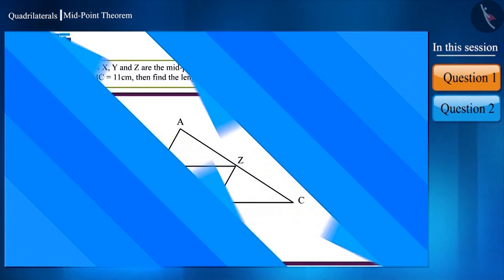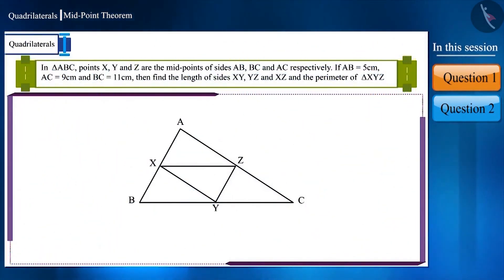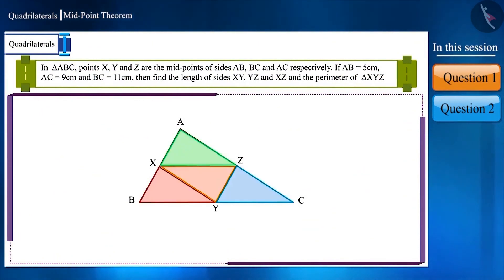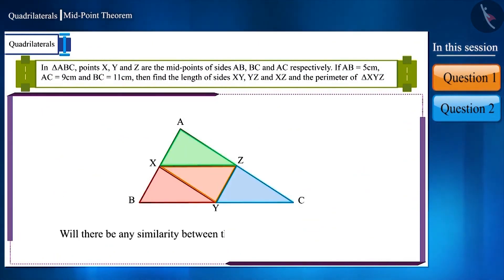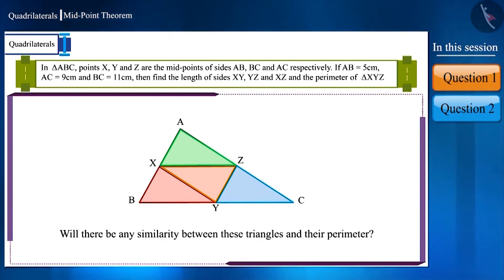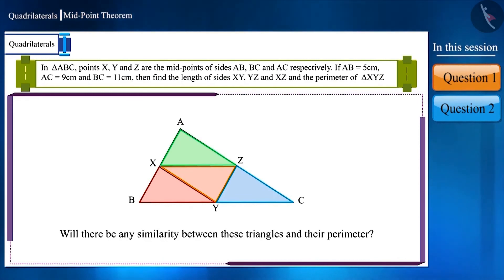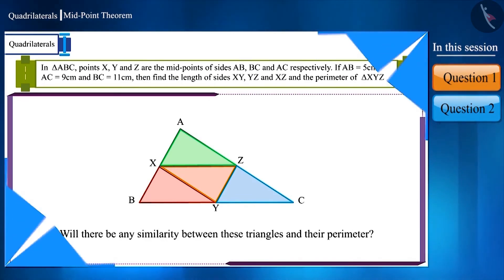Friends, look at the figure carefully — in triangle ABC four triangles are being formed. What can we tell about these triangles and their perimeter? Think about this question together with your friends; you can also take help from your teacher.